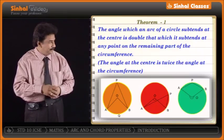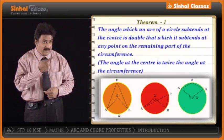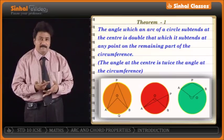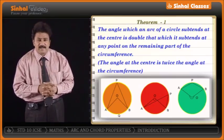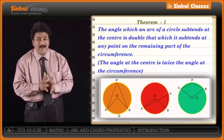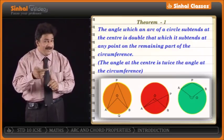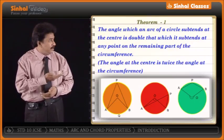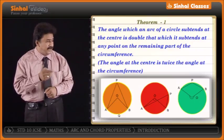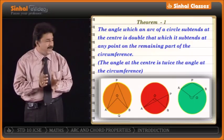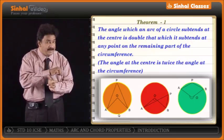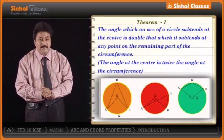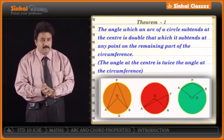In a third circle, angle AOB is twice angle APB. In all three circles the concept remains the same: the central angle is twice the angle at the circumference. The theorem states that the angle an arc of a circle subtends at the center is double that which it subtends at any point on the remaining part of the circle. The theorem looks very easy, and we are going to use it in many problems.